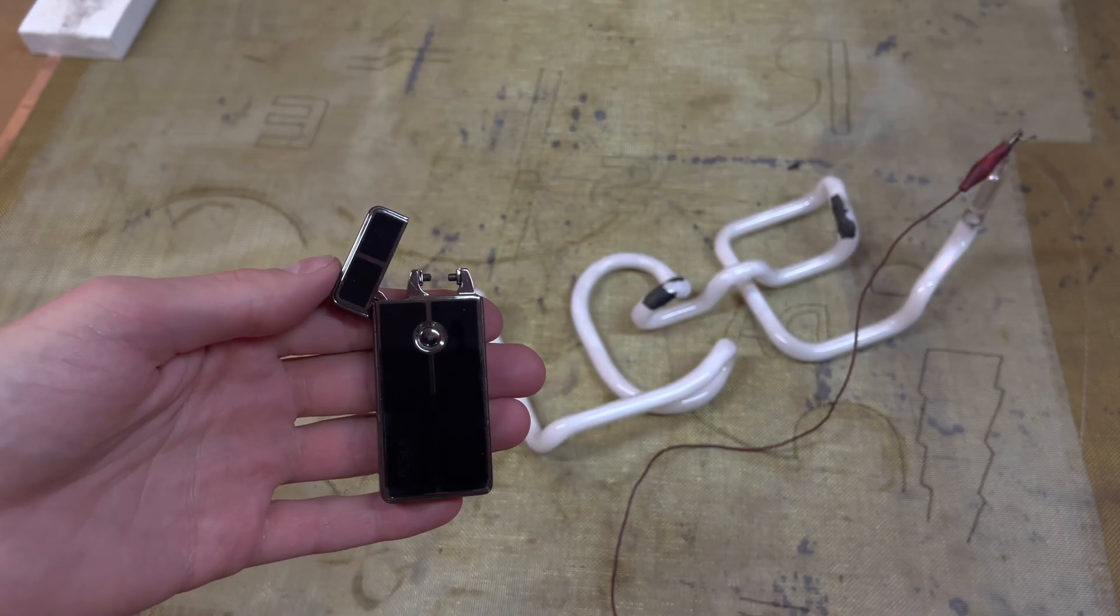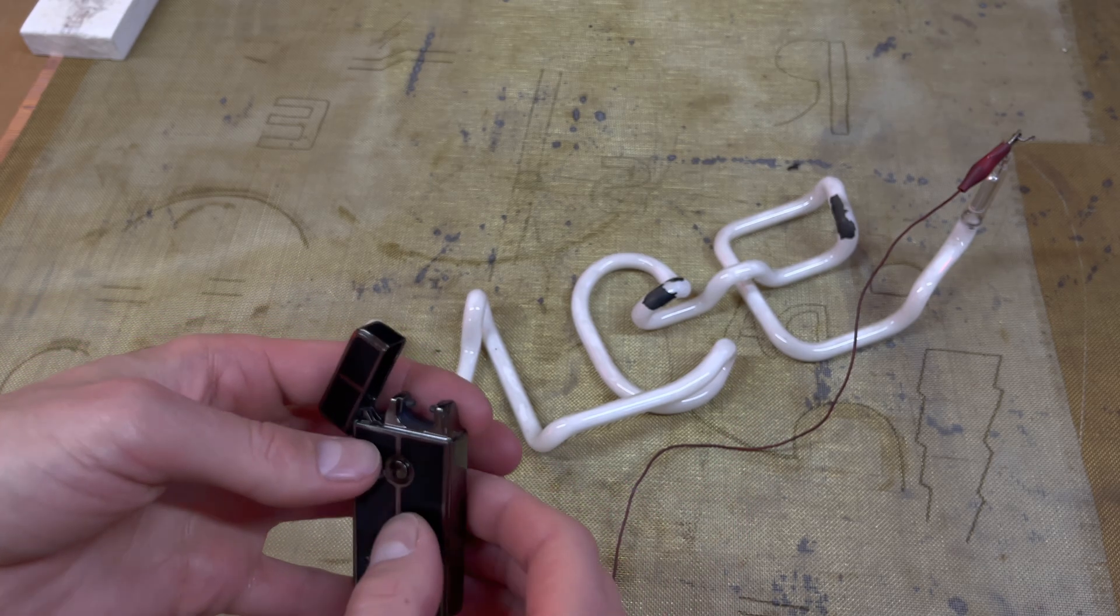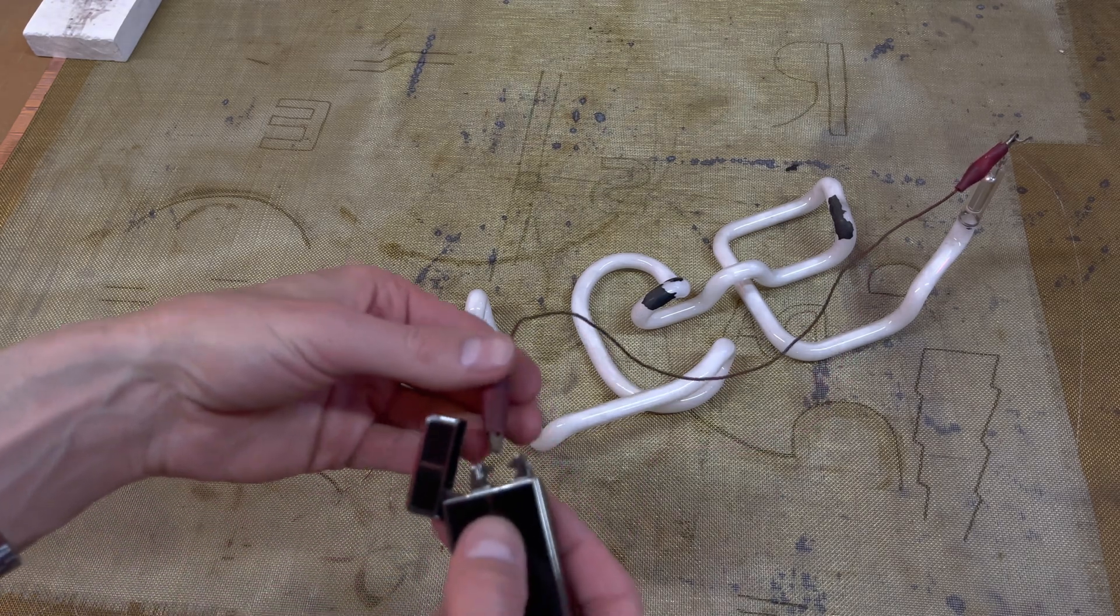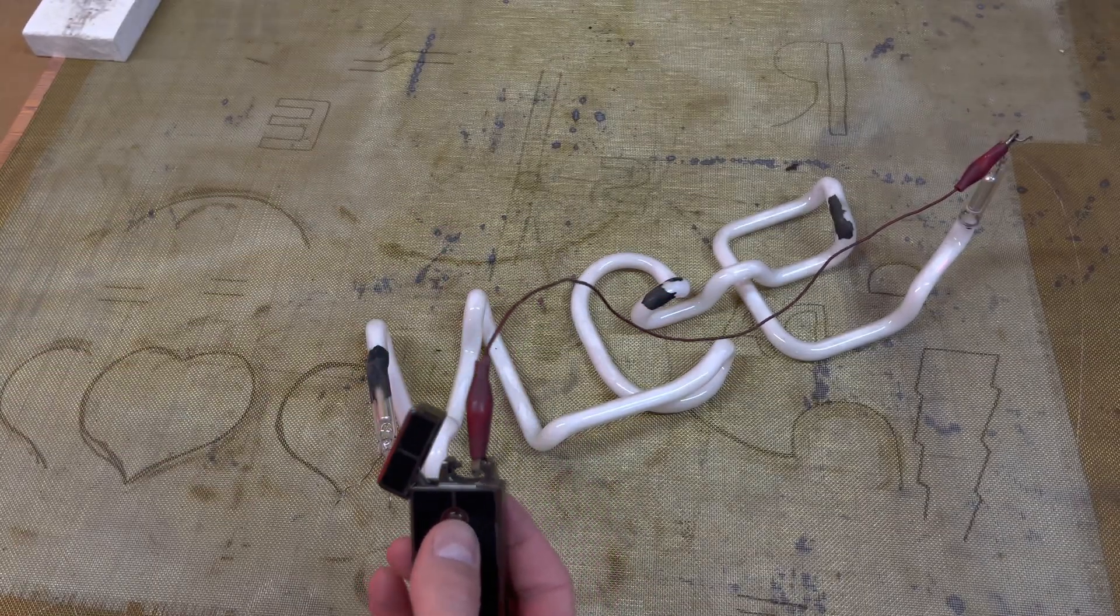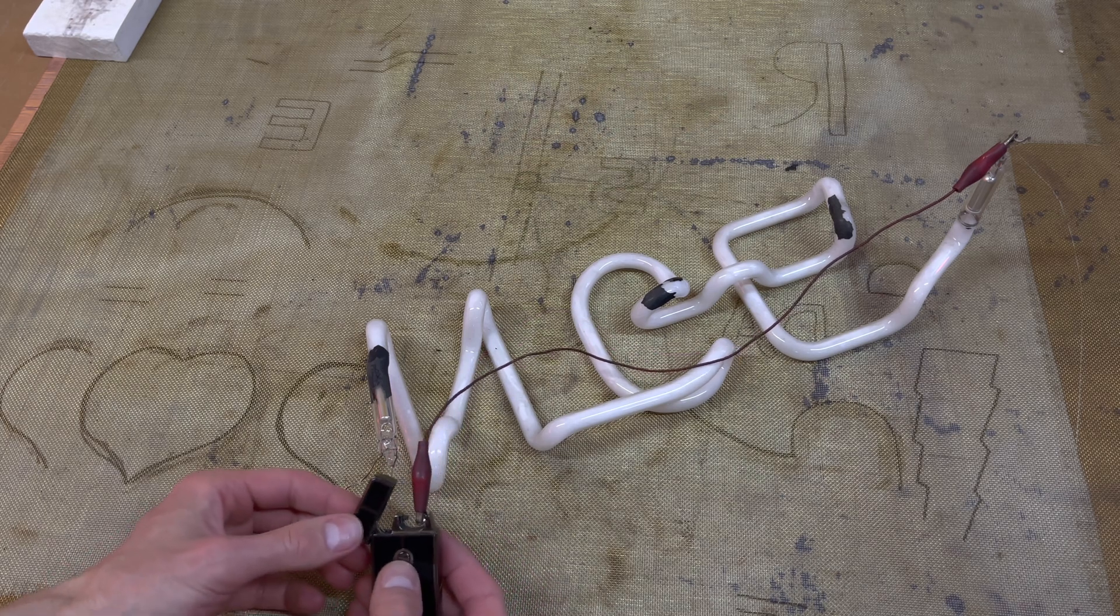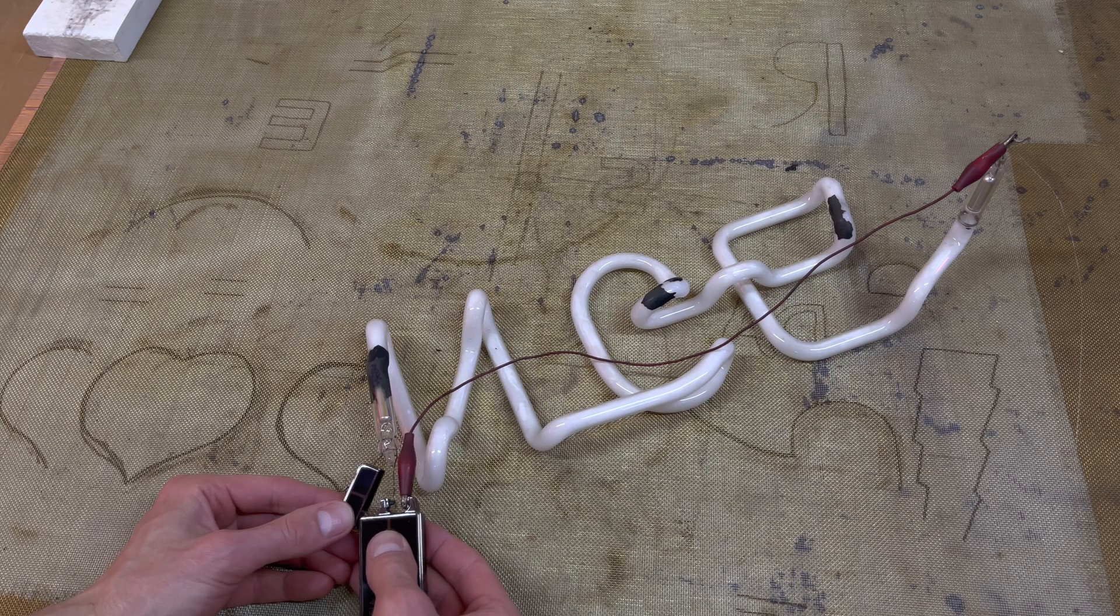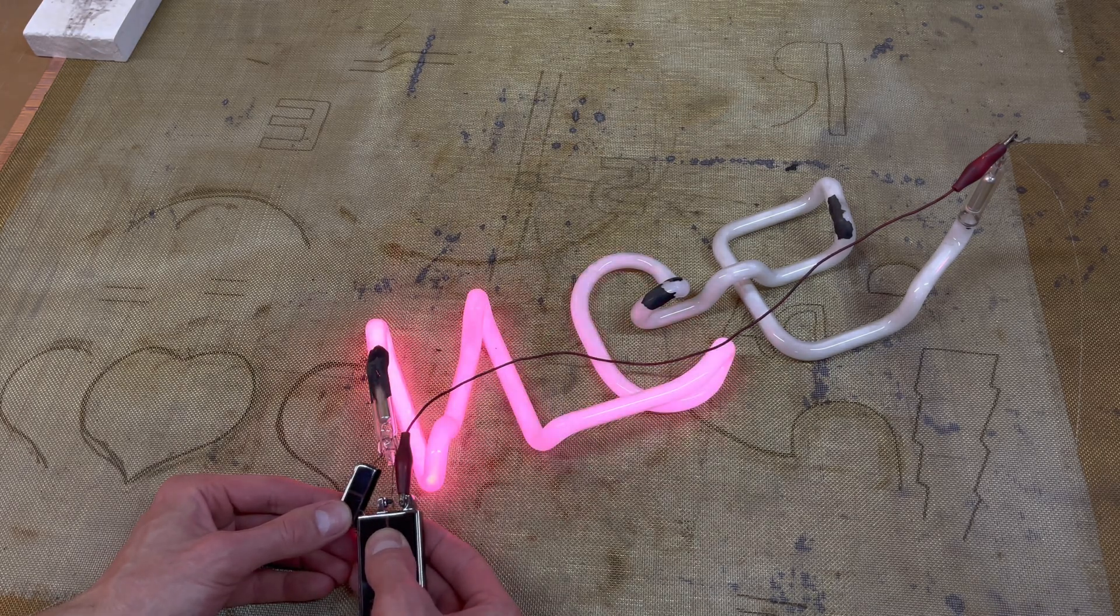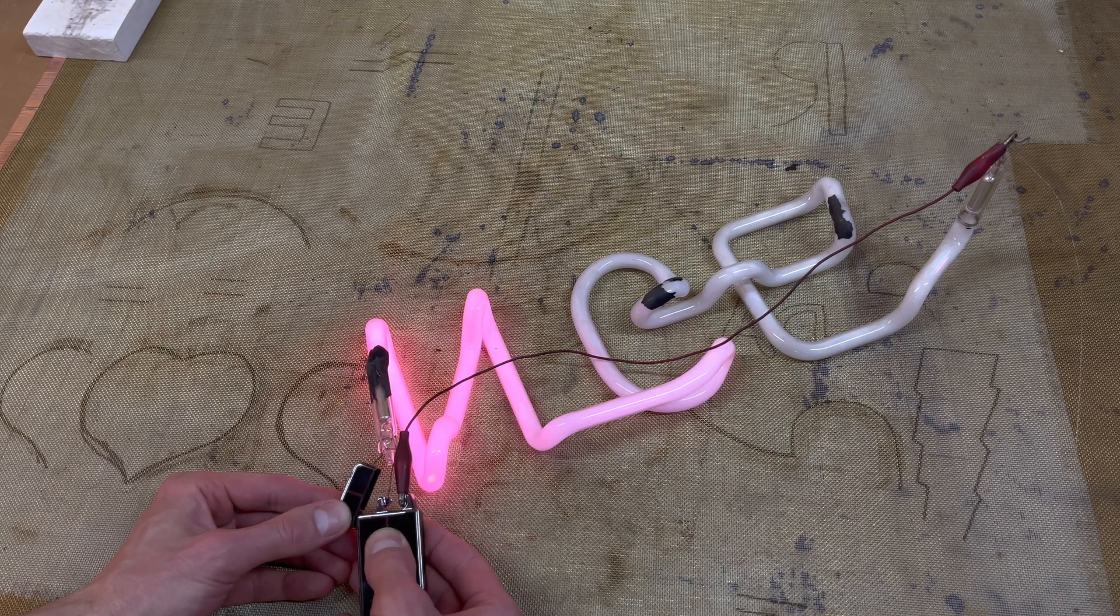No. Okay so I got to thinking about this and the other testers only have one contact but this one has two so we have to complete a circuit. I thought I could just maybe jumper one end to the electrode on one side and look at that. USB lighter powering a neon tube.